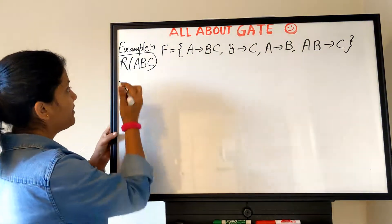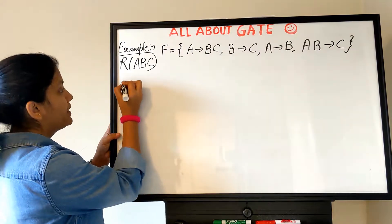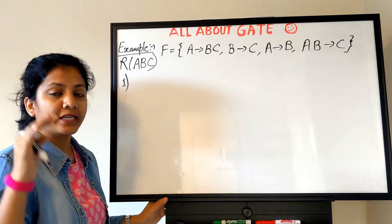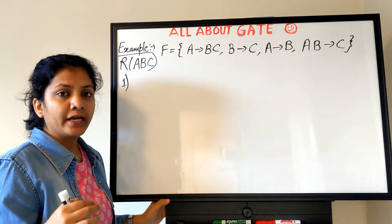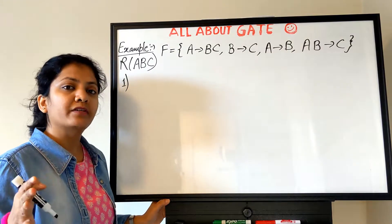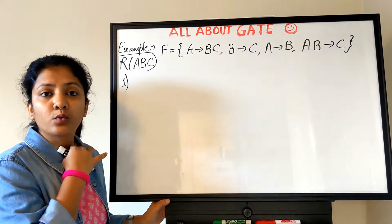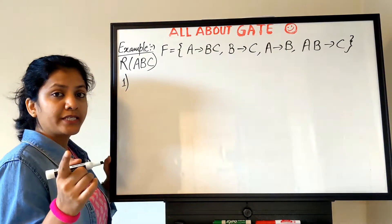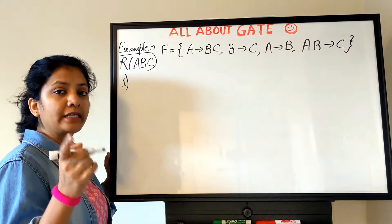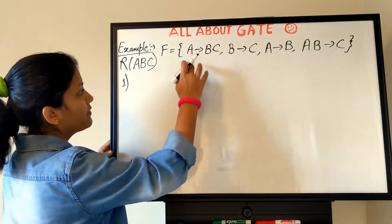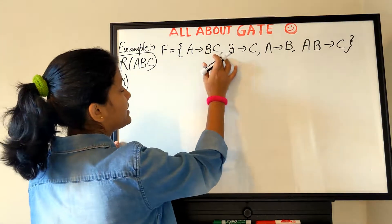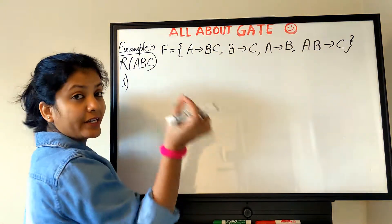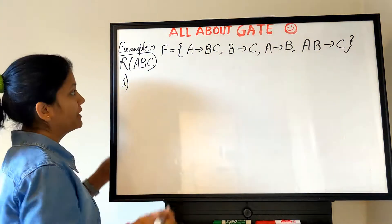Let's do it step by step. Remember, we have to apply all the steps in order — 1, 2, 3 — never ever change the order of the steps; the rules have to be applied in order. The very first step says that you have to singleton the RHS part. Whichever functional dependencies have multiple attributes on the RHS, we have to decompose them.